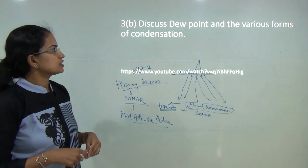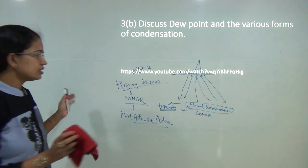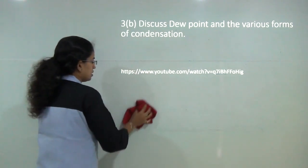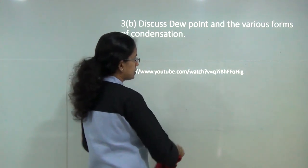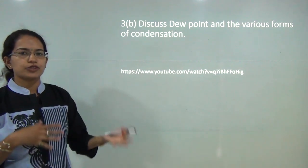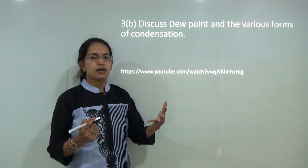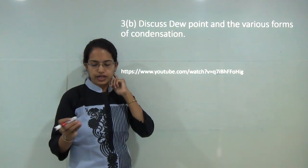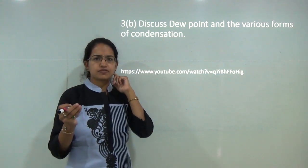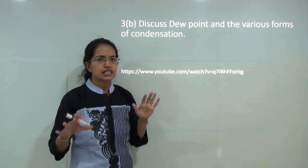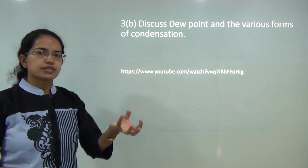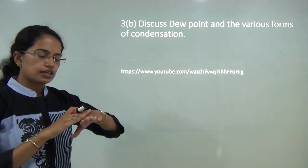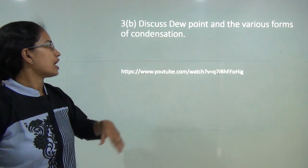The next question is to discuss dew point and the various forms of condensation. Condensation occurs in various forms: dew, fog, cloud formation, mist, and rime. Dew point mainly occurs when there is a clear sky and no wind. Water drops form by condensation and cool at the surface of the object they touch.